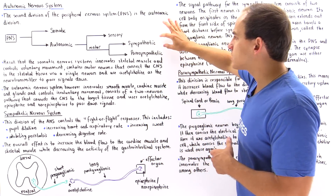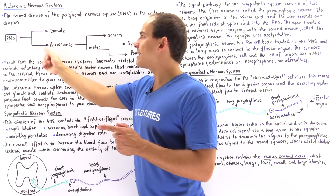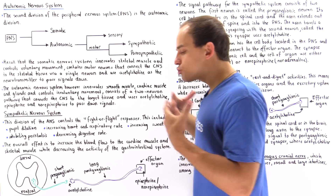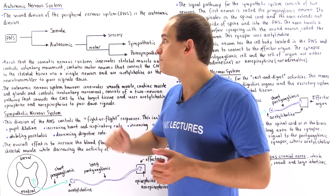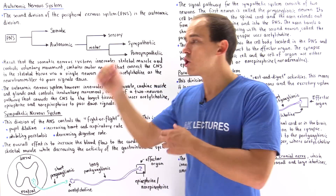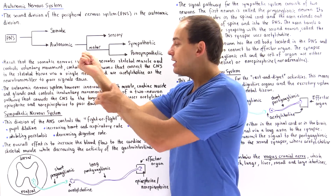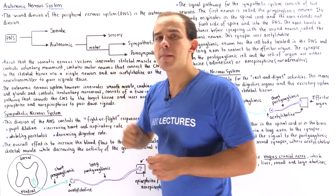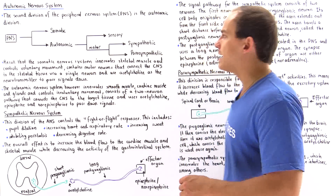Before we discuss these two individual systems, let's discuss what the difference is between our somatic and autonomic nervous system. The somatic nervous system innervates skeletal muscles and skeletal tissue, meaning it is responsible for our voluntary movement. What allows me to move my arm back and forth is that inside my arm I have skeletal tissue innervated by our somatic nervous system — our skeletal muscle.